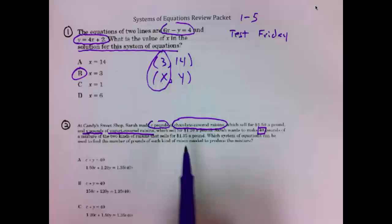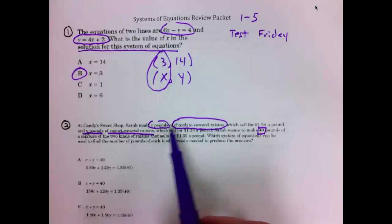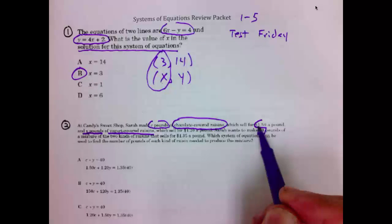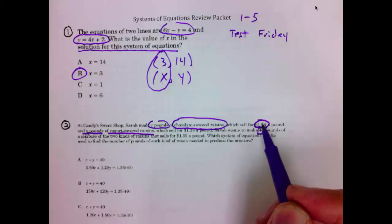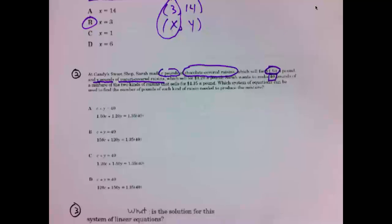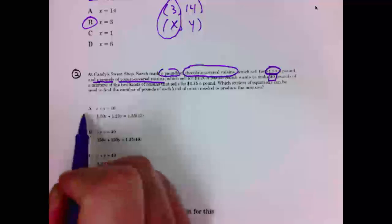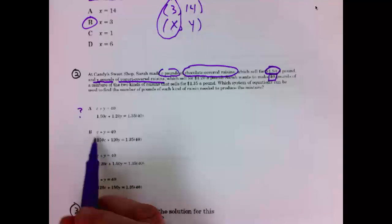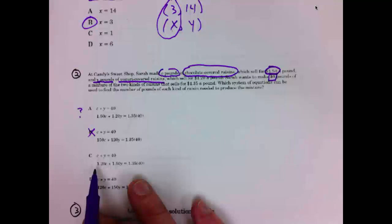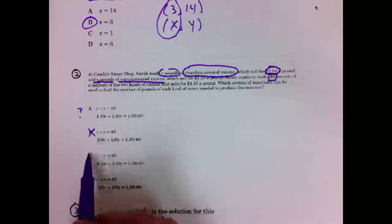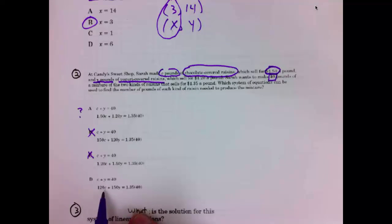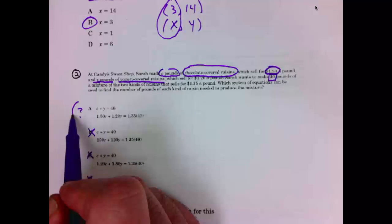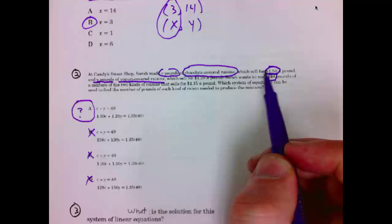The key thing here is that c will be the chocolate covered pounds. They sell for $1.50 a pound, so 150 needs to be multiplied by c. Let's see if we can find the equation that says that. 150 times c, that's a possibility. This says 150 c, we want 1.5, can't be b. This says 1.20 c, that's the yogurt covered. This says 120 c, so indeed, a is the only one that shows 150 times c, our chocolate covered.